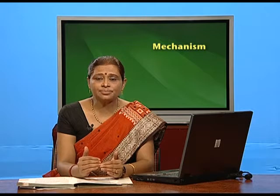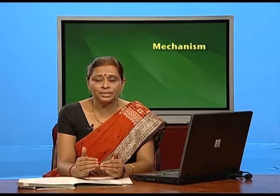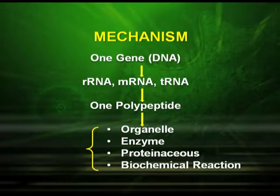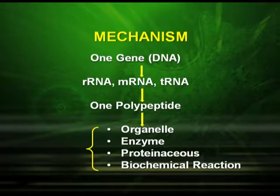When we go into the mechanism of gene expression, we see that one gene — the gene which is represented by DNA — forms ribosomal RNA, messenger RNA, and tRNA, and that leads to one polypeptide. These polypeptides affect the organ, they affect the enzyme which is proteinaceous, and the biochemical reactions taking place in the body.